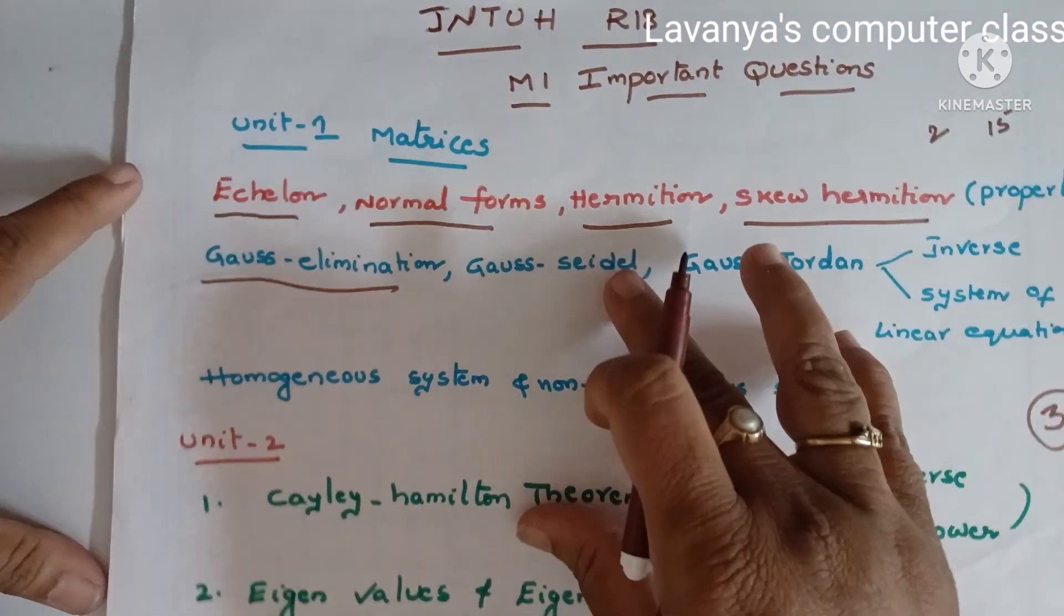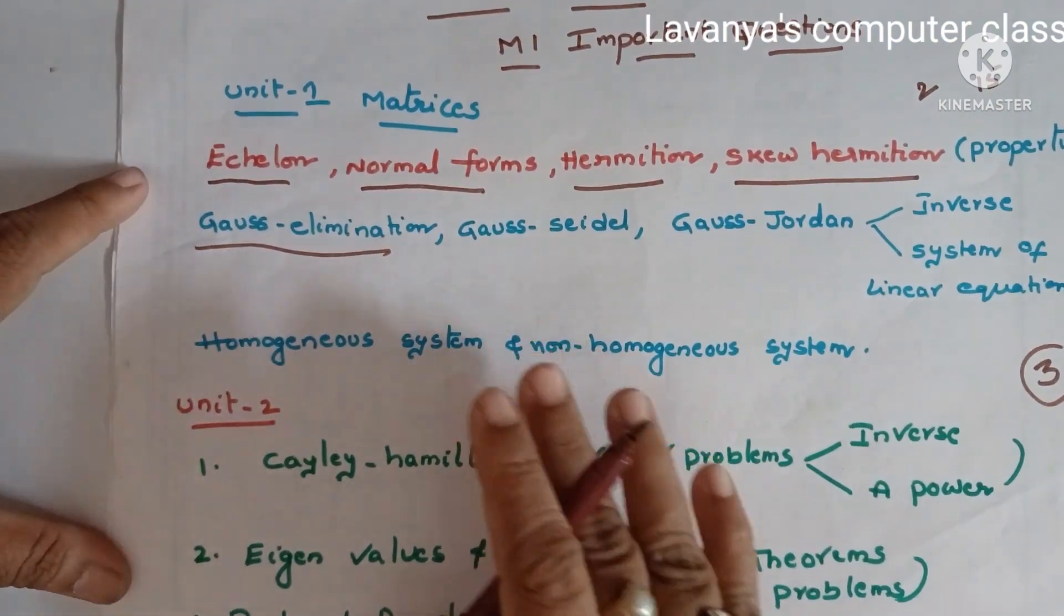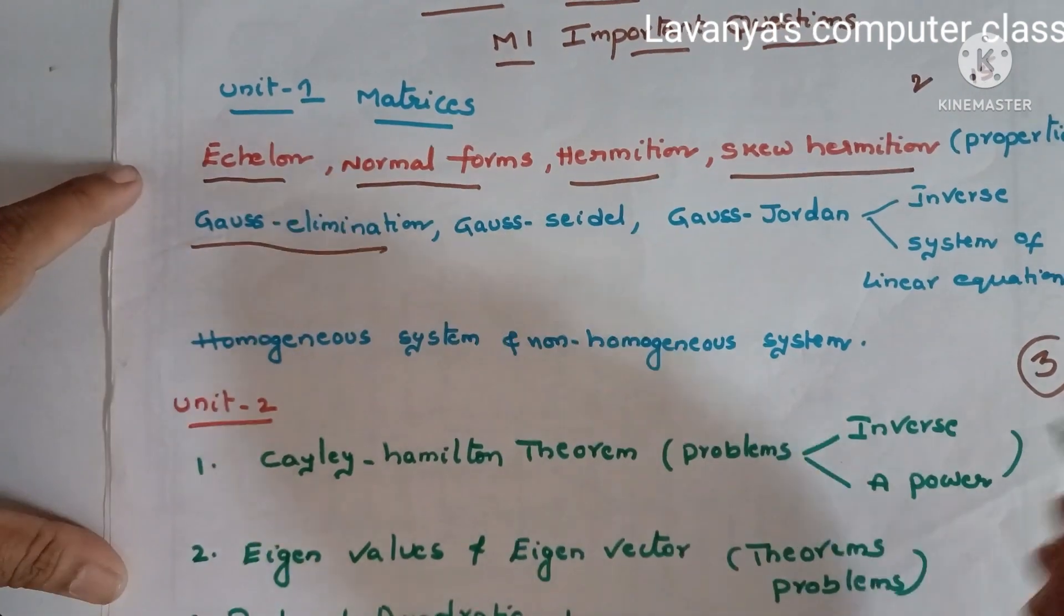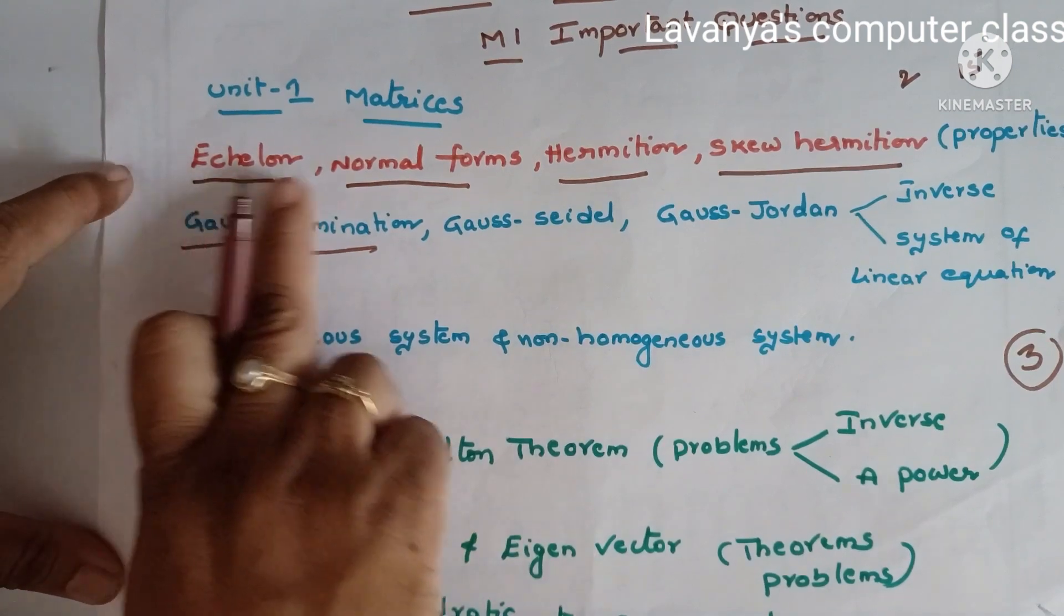See this again. Unit one and unit two, most concentrate on unit one and unit two. In these only you will get easily four questions, otherwise at least minimum three questions are coming. Unit one and unit two, these are it.